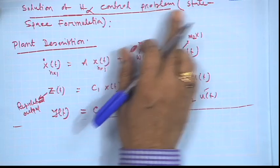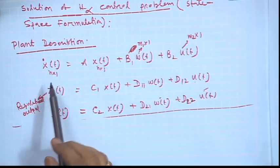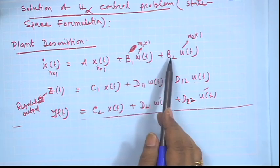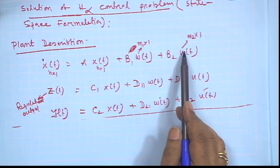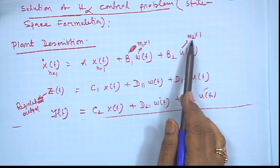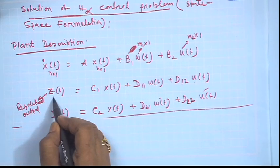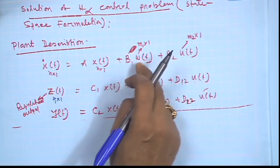Last class we were discussing the solution of the H-infinity control problem in a state space formulation framework. Our plant description is x-dot = Ax + B1*w + B2*u, where w is the exogenous input with dimension m1×1, u is the control input with dimension m2×1, and z is the regulated output with dimension p1×1.